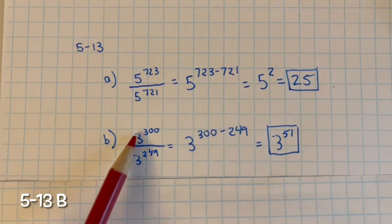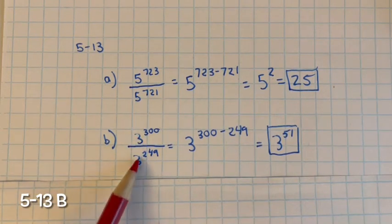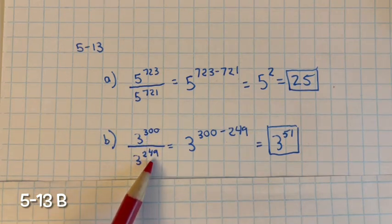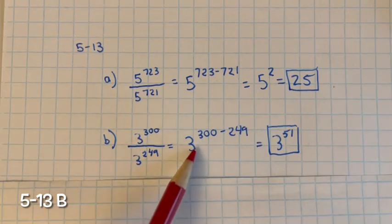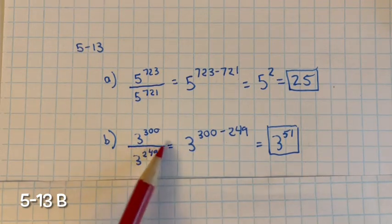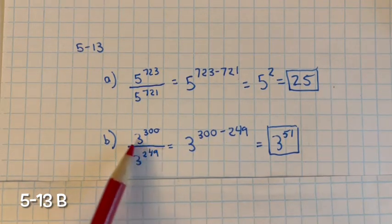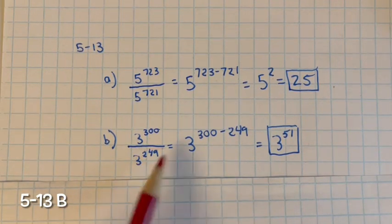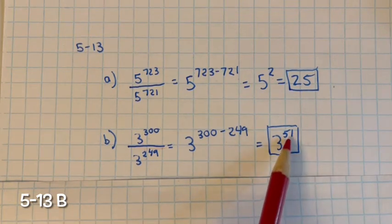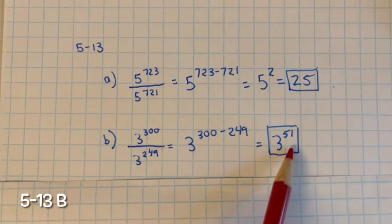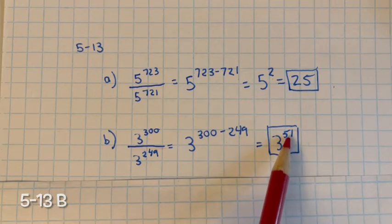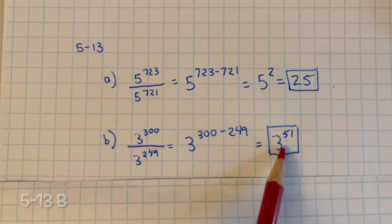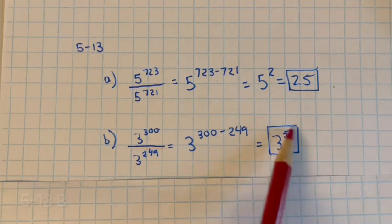For part B, we have the same base — 3 and 3 — with more exponents in the numerator than the denominator. So we keep the base: 300 minus 249, which gives us 3 to the 51st power. Typically, if the exponent is 4 or less you would simplify it, but since it's greater than 4, you leave it in this form.